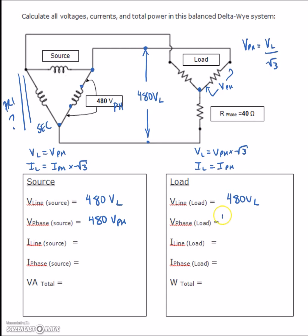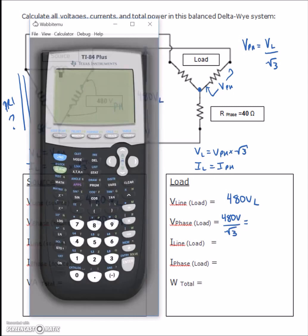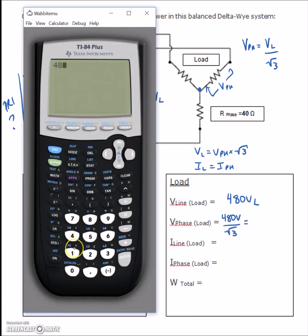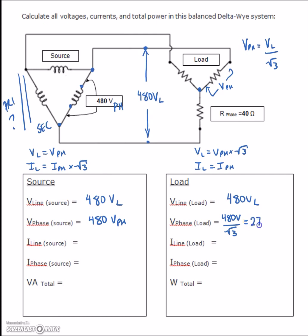V_phase = V_line ÷ √3 = 480 ÷ √3. Putting that into the calculator gives us 277.12, so we round to 277V on the phase.